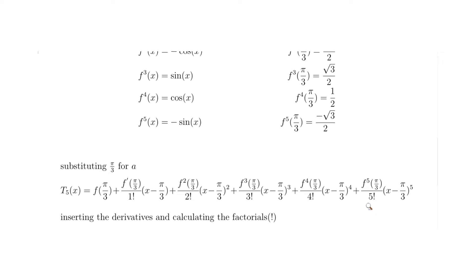The factorial values are: 5! = 120, 4! = 24, 3! = 6, 2! = 2, and 1! = 1. Next we substitute the derivatives and the factorials into the formula.